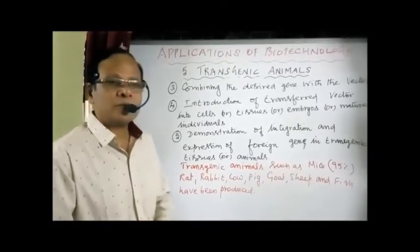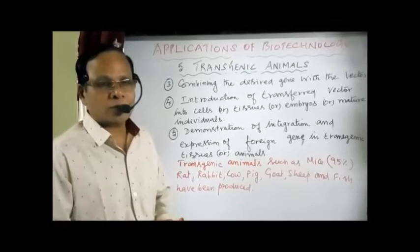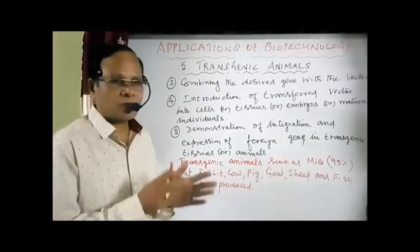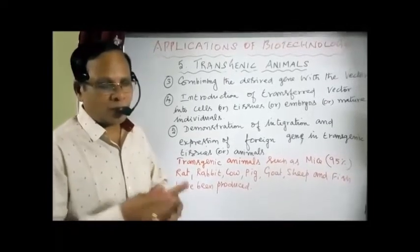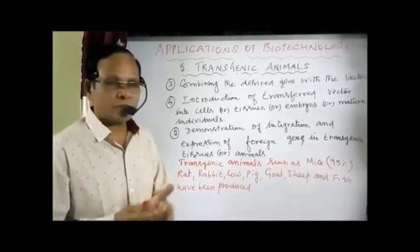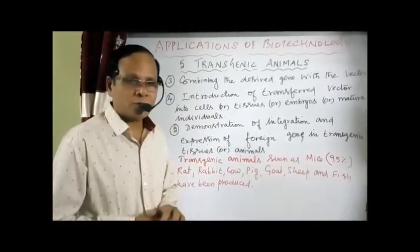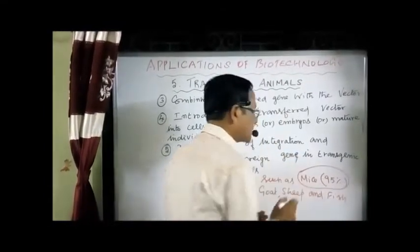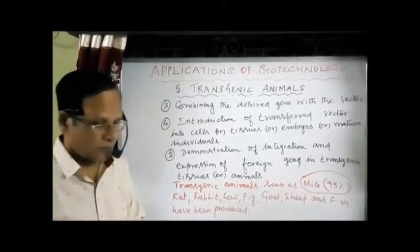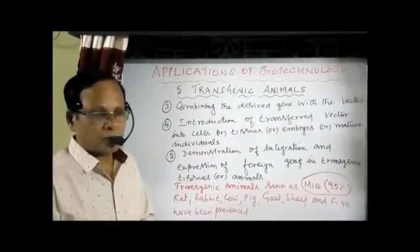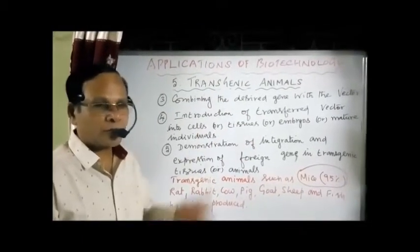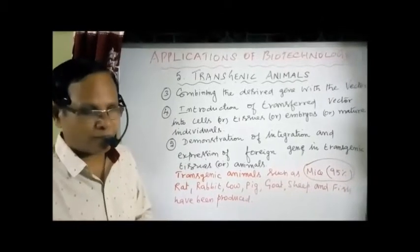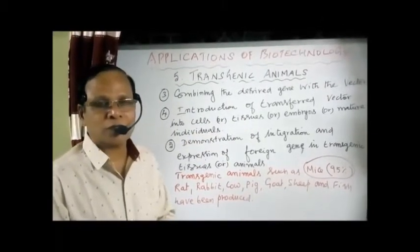A number of transgenic animals have been produced — for example, mice, rat, rabbit, cow, goat, sheep, and fish. Out of the transgenic animals produced, 95% are mice. Previously, in early periods, we adapted selective breeding — inbreeding, outbreeding, cross-breeding — but now we are adapting biotechnology methods to produce transgenic organisms.